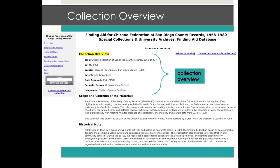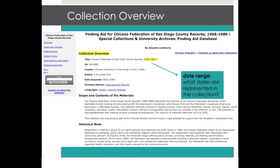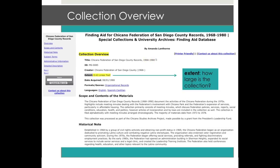Scan the collection overview to get a concise view of vital information about the collection. Pay special attention to the specified date range. If you are looking for items from a particular century or era, you can tell whether the collection falls within this period by looking closely at the date range. Also note the extent of the collection. Different institutions may use different units for measuring extent, for example, linear feet, cubic feet, boxes, or items. This number will give you an idea of how large or small the collection is, and how many boxes it contains, which is helpful when considering how much time it will take to complete your research.